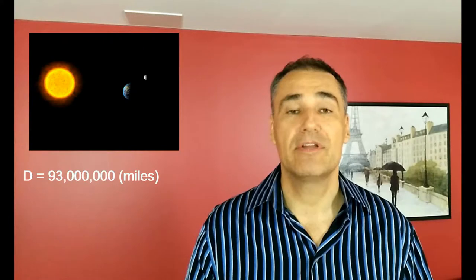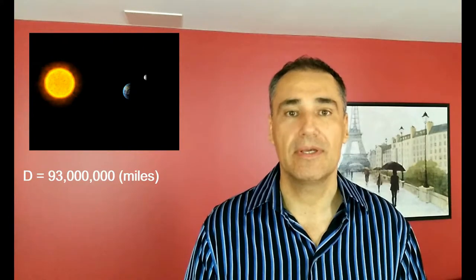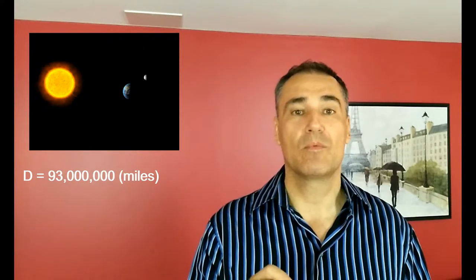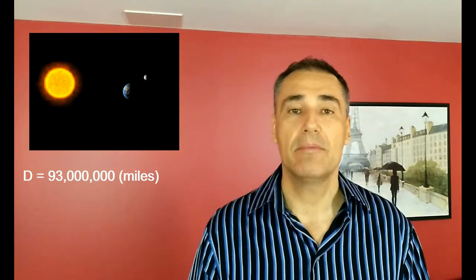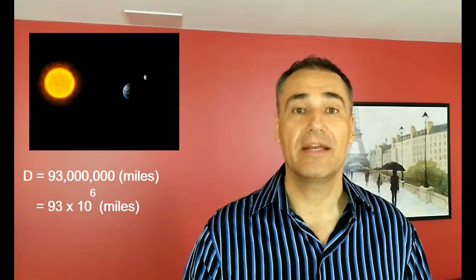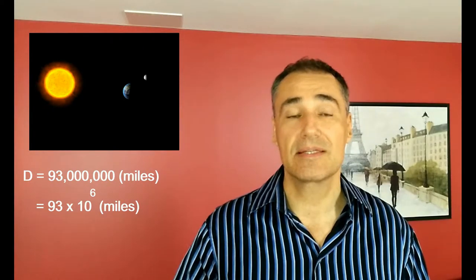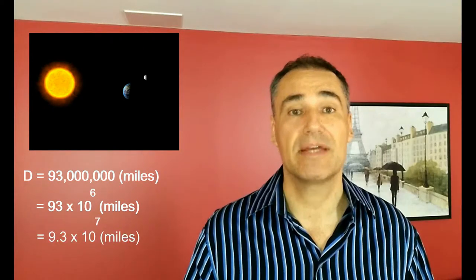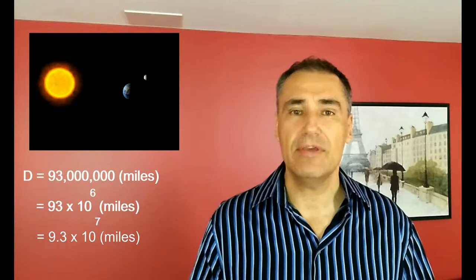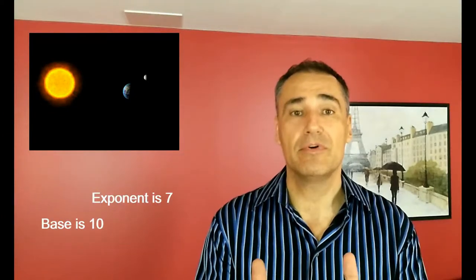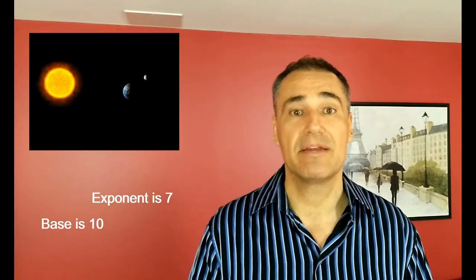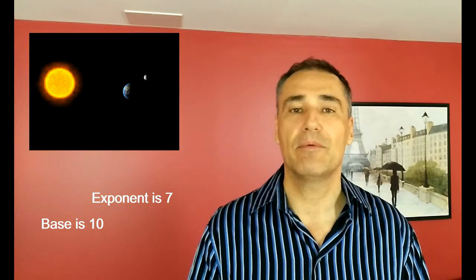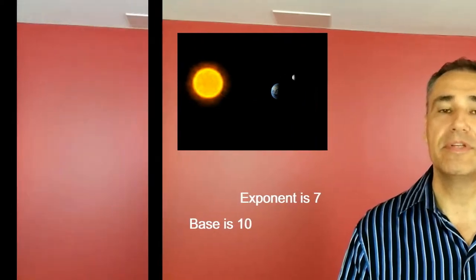So on average, it's about 93 million miles. So when you write that down, it's 93 plus six zeros after it. But you can also write that down as 93 times 10 to the 6th or 9.3 times 10 to the 7th. So it saves a lot of time. In this example, the base number is 10 and the exponent is 7 when it's 9.3 times 10 to the 7th.